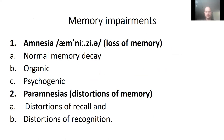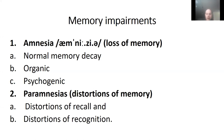Now let's go to the classification. We have two types: amnesia and paramnesia. Amnesia is a loss of memory. Paramnesia is a distortion of memory — they are different things. Under amnesia we have normal, organic, and psychogenic. Under paramnesia we have distortion of recall and distortion of recognition. We will study them one by one.